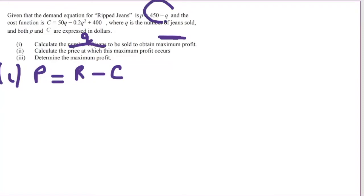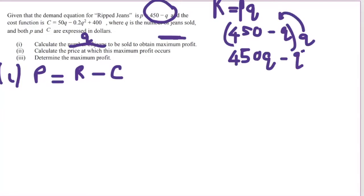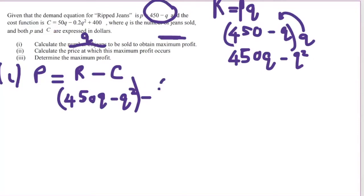I don't have revenue directly, but I can find it because I'm given the price function. Revenue is price times quantity, so I have (450 minus Q) times Q, giving me the revenue function. So revenue is 450Q minus Q squared. Then I subtract the cost function, which gives me minus (50Q minus 0.2Q squared plus 400).